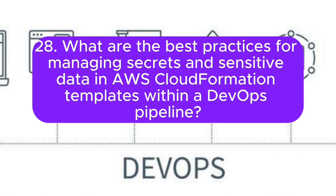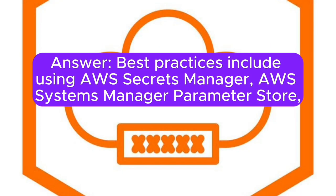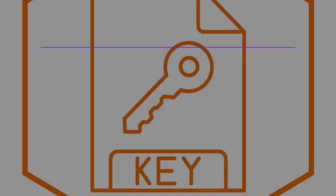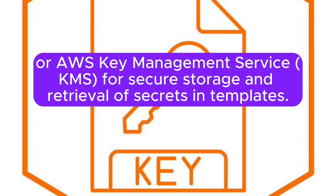Question 28: What are the best practices for managing secrets and sensitive data in AWS CloudFormation templates within a DevOps pipeline? Answer: Best practices include using AWS Secrets Manager, AWS Systems Manager Parameter Store, or AWS Key Management Service (KMS) for secure storage and retrieval of secrets in templates.